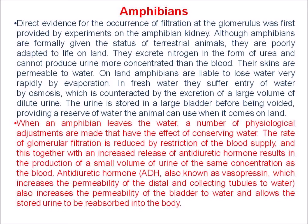When an amphibian leaves the water, a number of physiological adjustments are made that have the effect of conserving water. The rate of glomerular filtration is reduced by restriction of the blood supply, and this together with an increased release of anti-diuretic hormone results in the production of a small volume of urine of the same concentration as the blood. Anti-diuretic hormone, or vasopressin, which increases the permeability of the distal and collecting tubules to water, also increases the permeability of the bladder to water and allows the stored urine to be reabsorbed into the body.